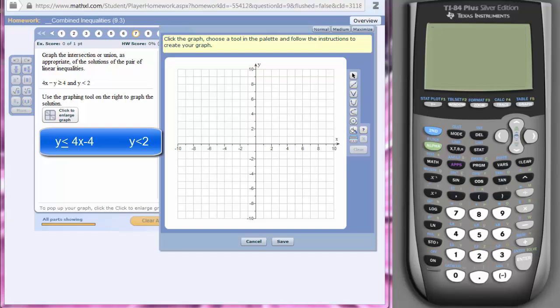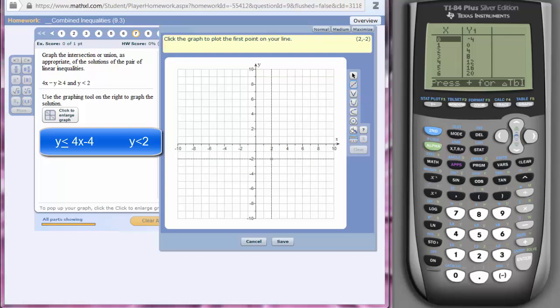Now we have our two lines in slope-intercept form. Of course, this one always was in slope-intercept form, but now we have this one in slope-intercept form. I'm going to go to y equals and I'm going to let y1 equal 4x - 4. I need two points for 4x - 4, so I'm going to go second graph. How about the point (0, -4) and the point (1, 0)? Right there.